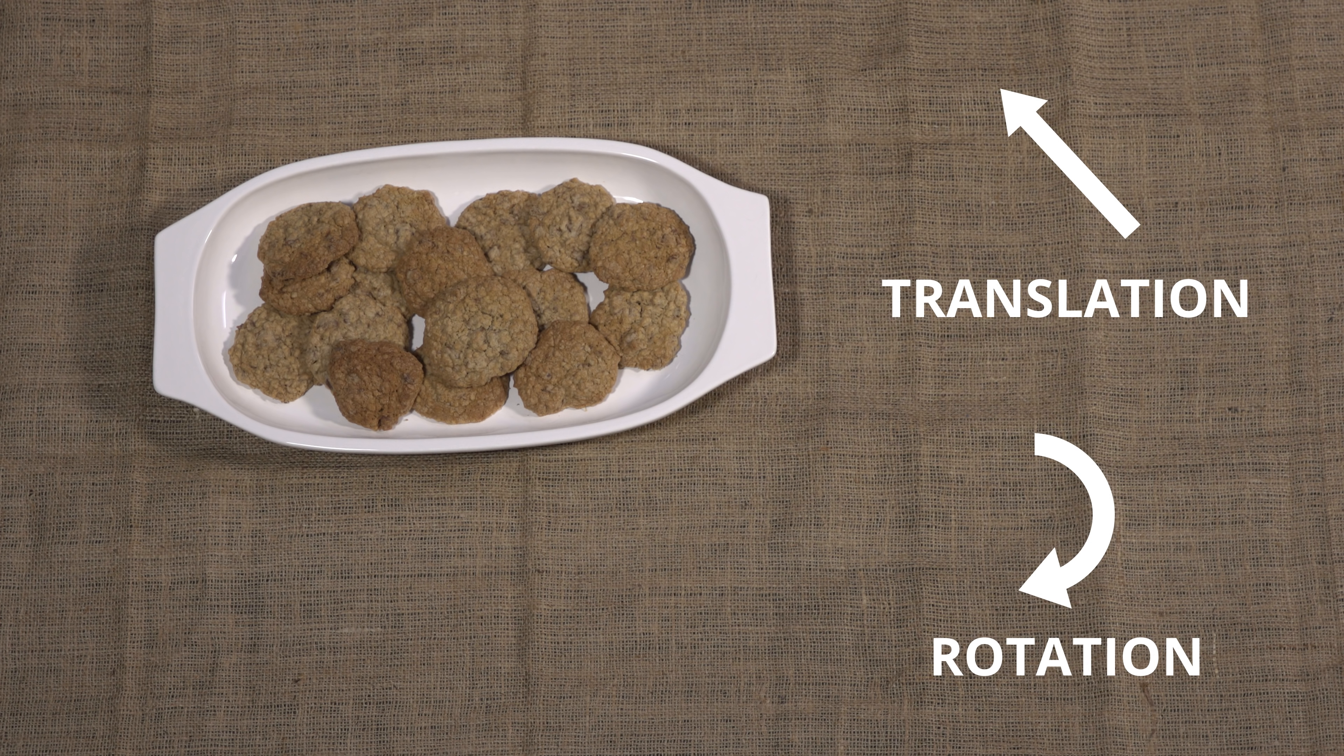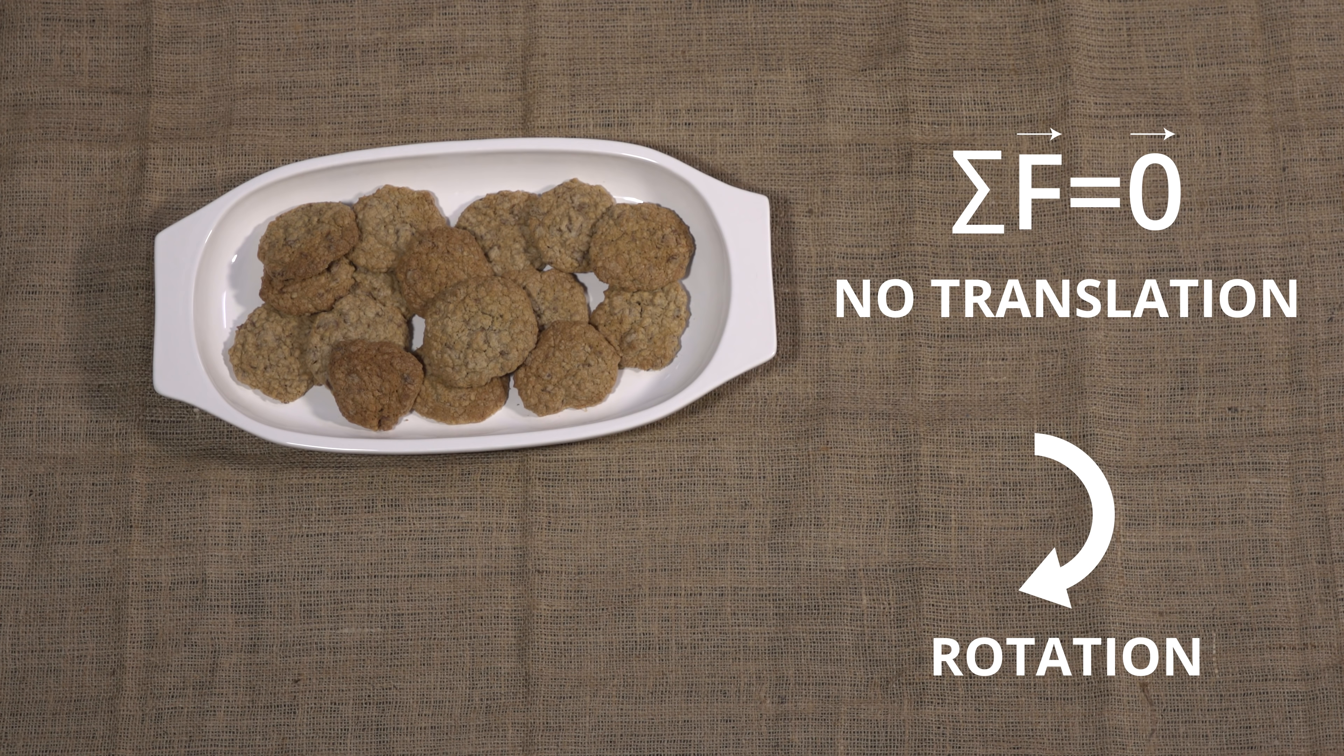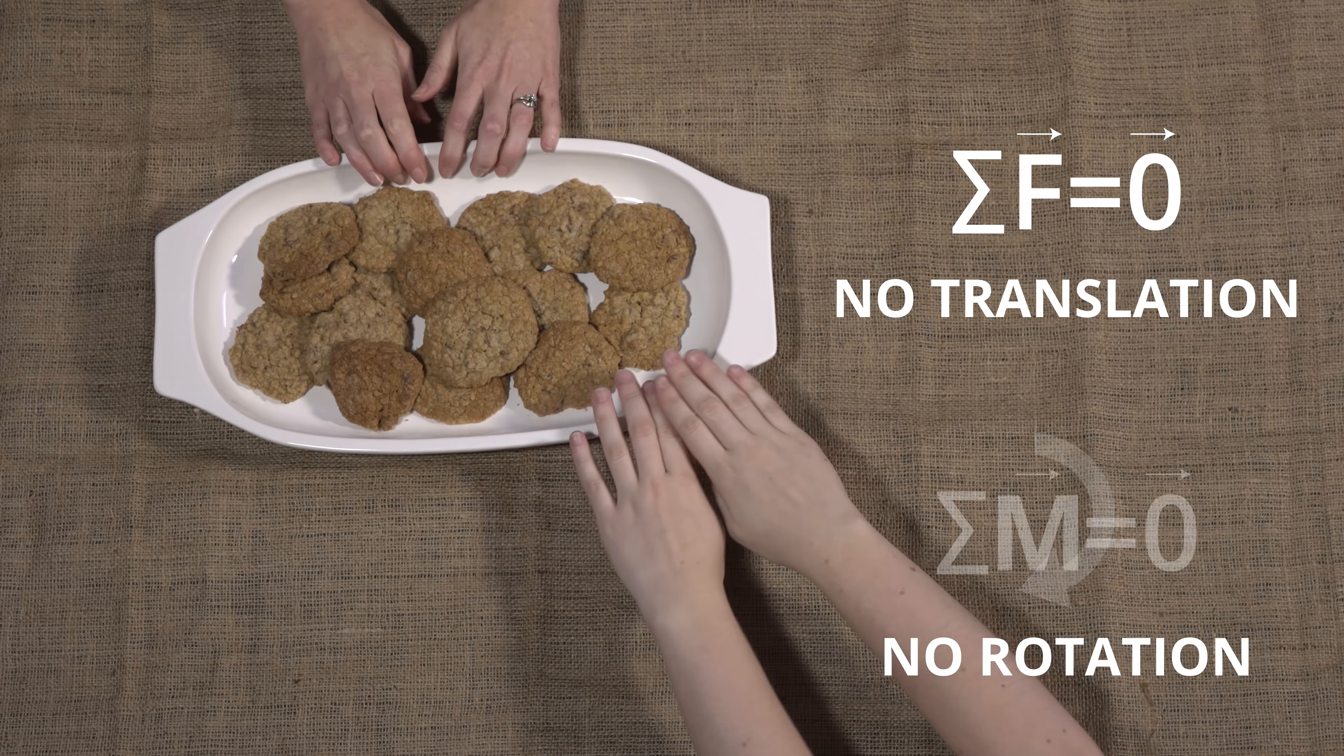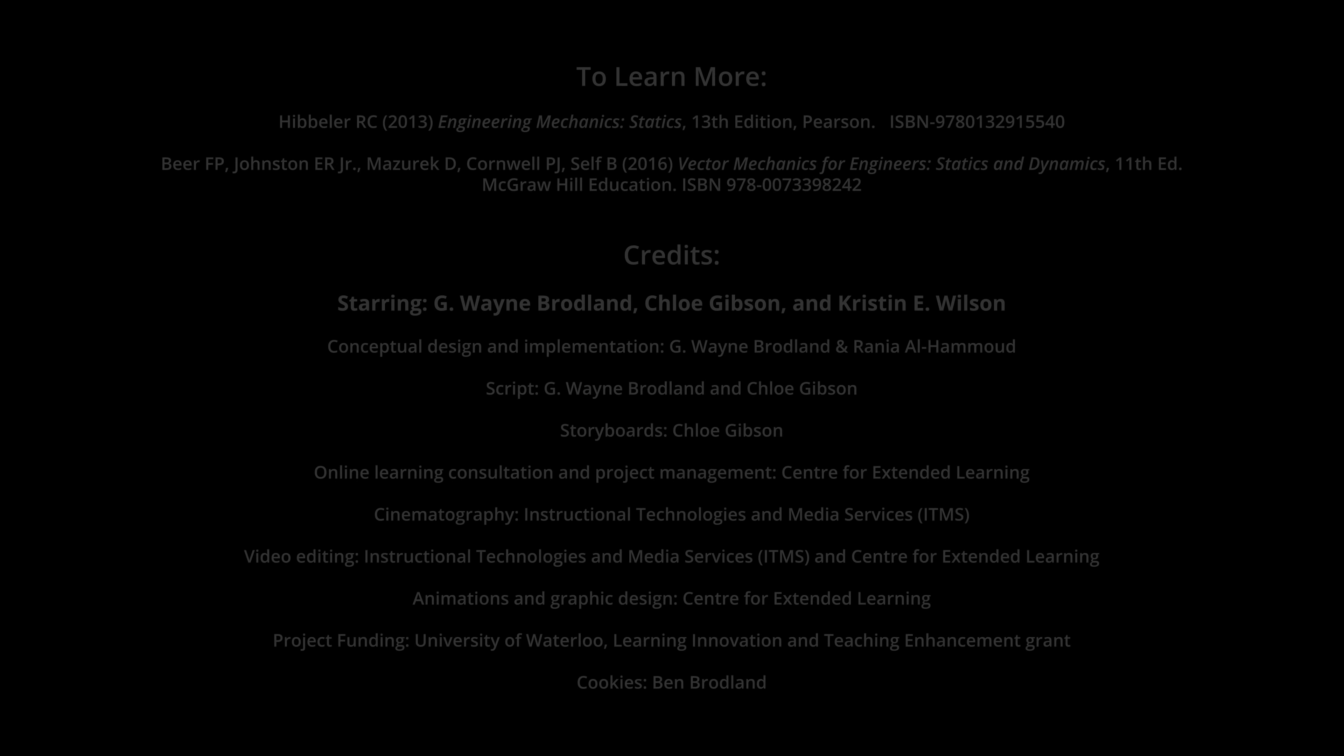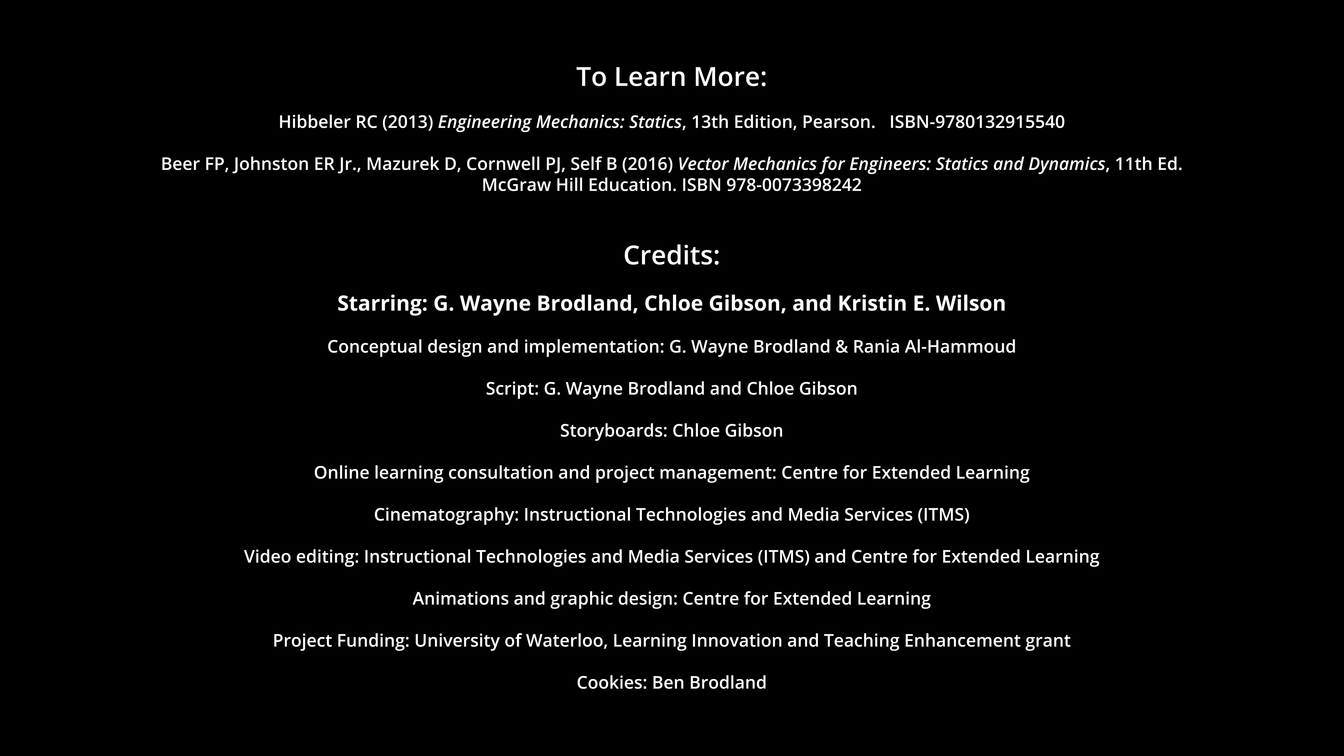For the cookie tray to be in equilibrium, the vector sum of the forces acting on it must be zero, and the sum of the moments that they produce must be zero. If you followed all of the concepts outlined in this video, you deserve a treat. We hope you will watch some of our other Engineering Models videos. Bye for now!